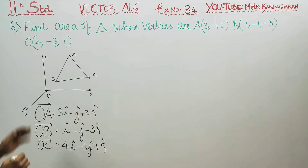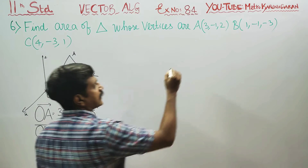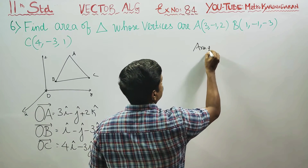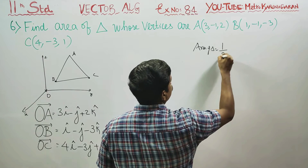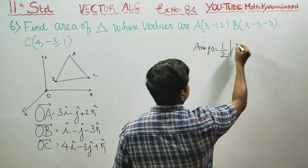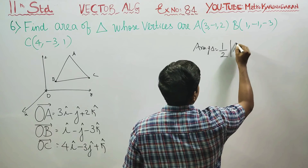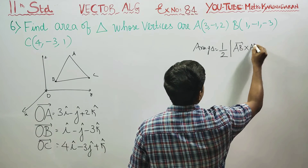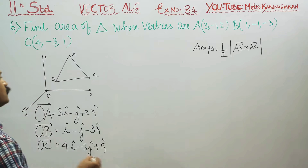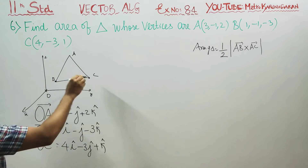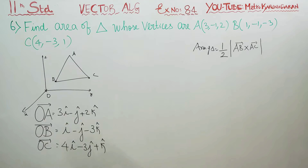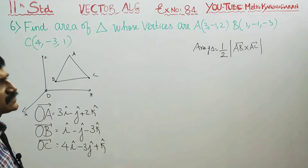To find the area of the triangle, the formula is: area of the triangle is half of the magnitude of any two sides — AB vector cross AC vector. This is the formula. Any two sides: AB and AC, or BC and BA, or CA and CB.